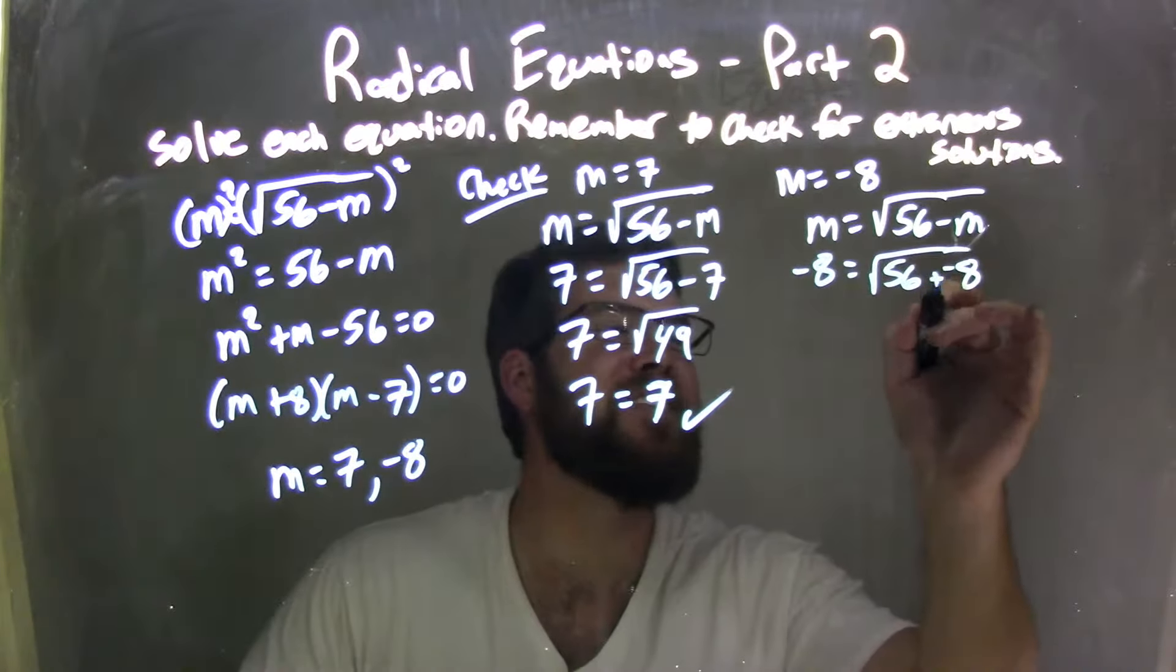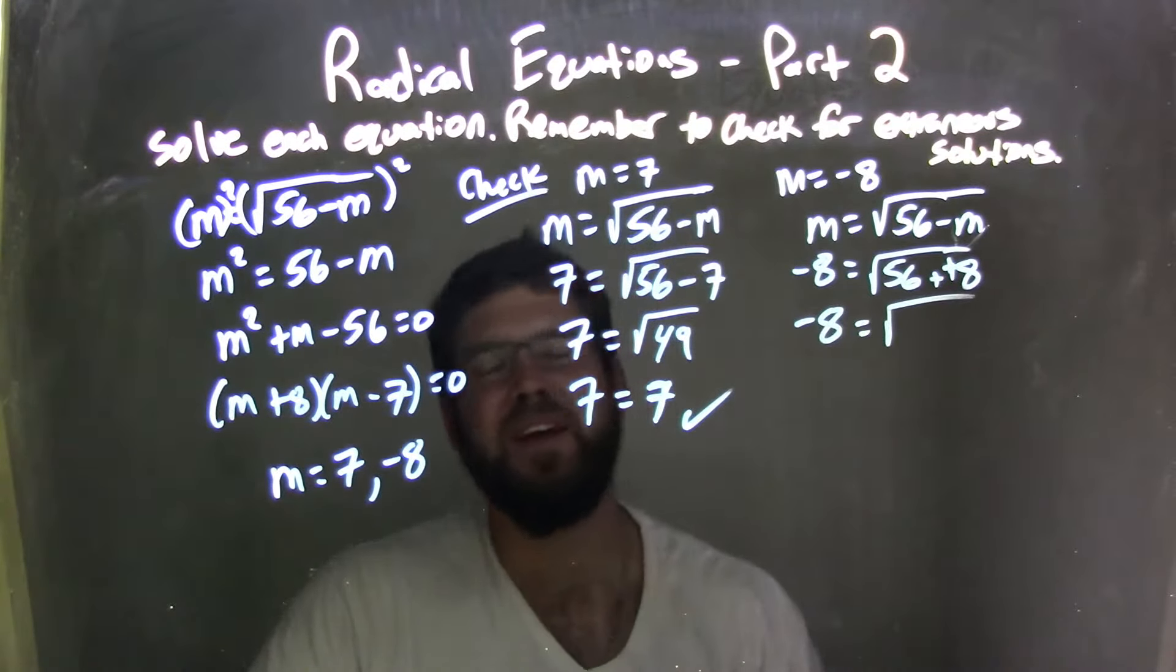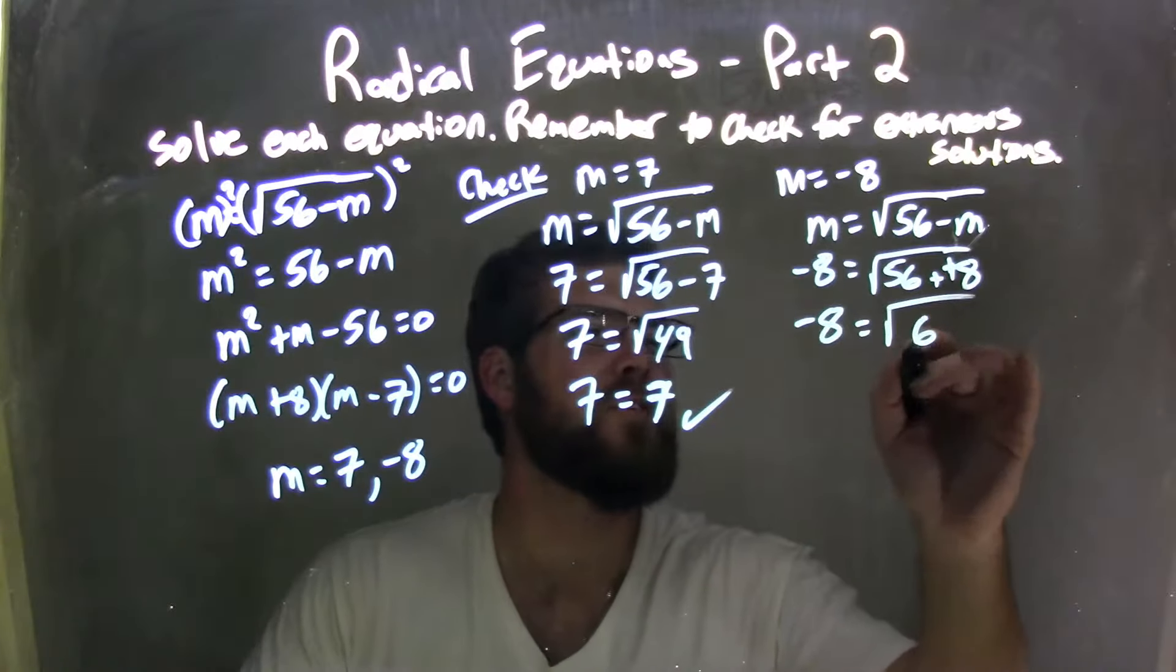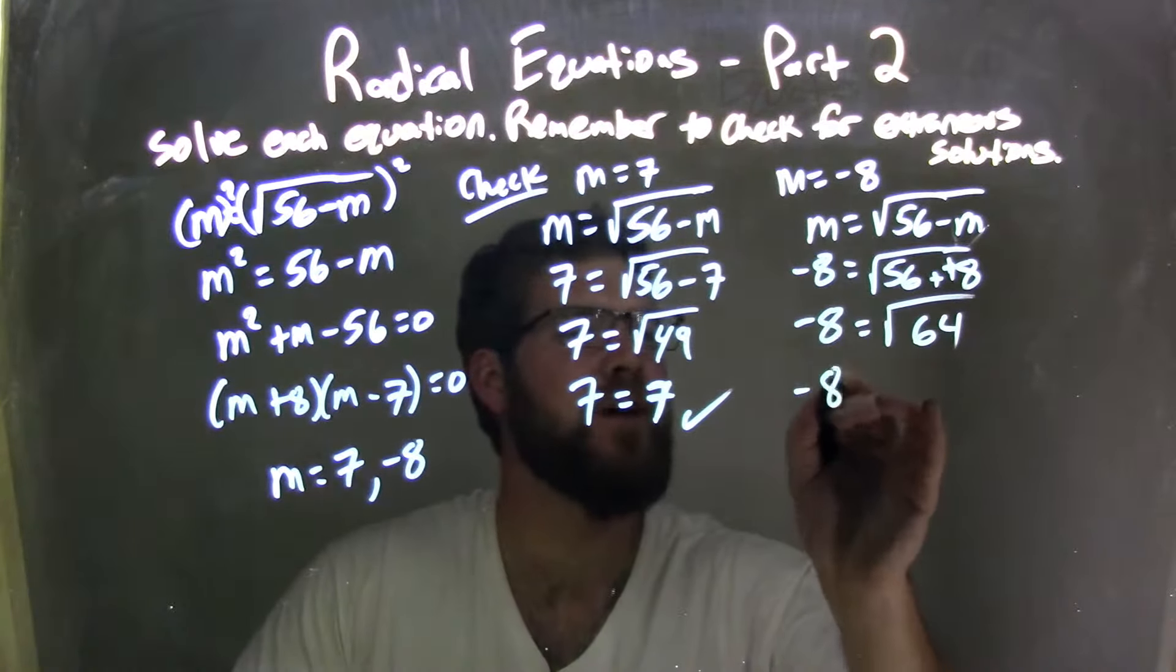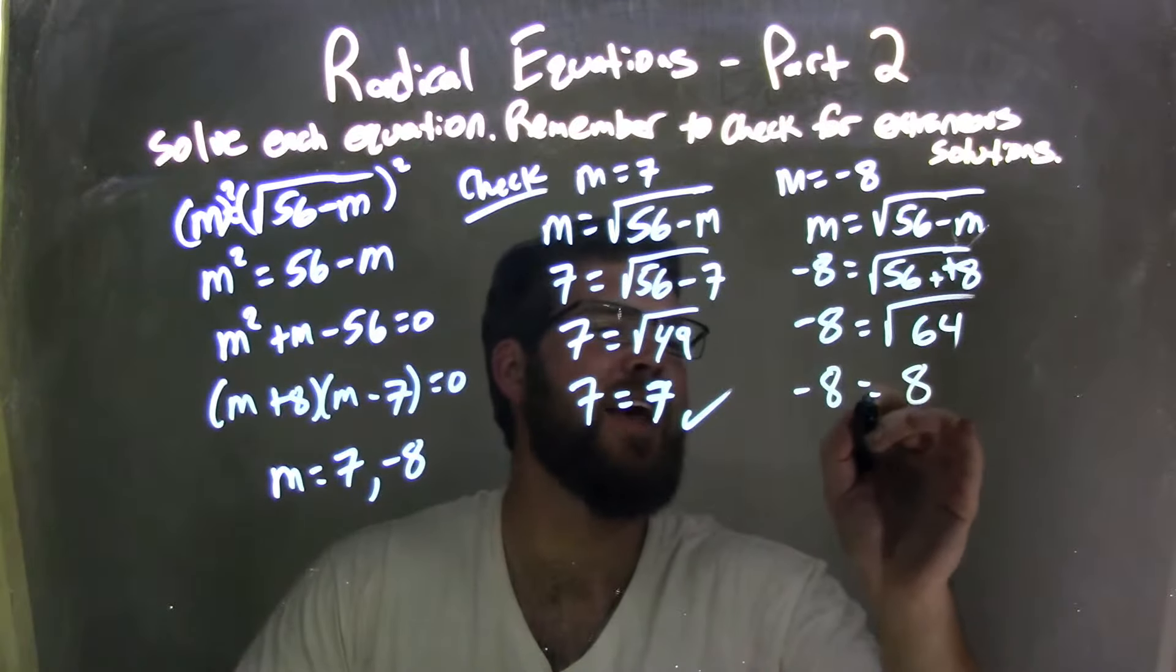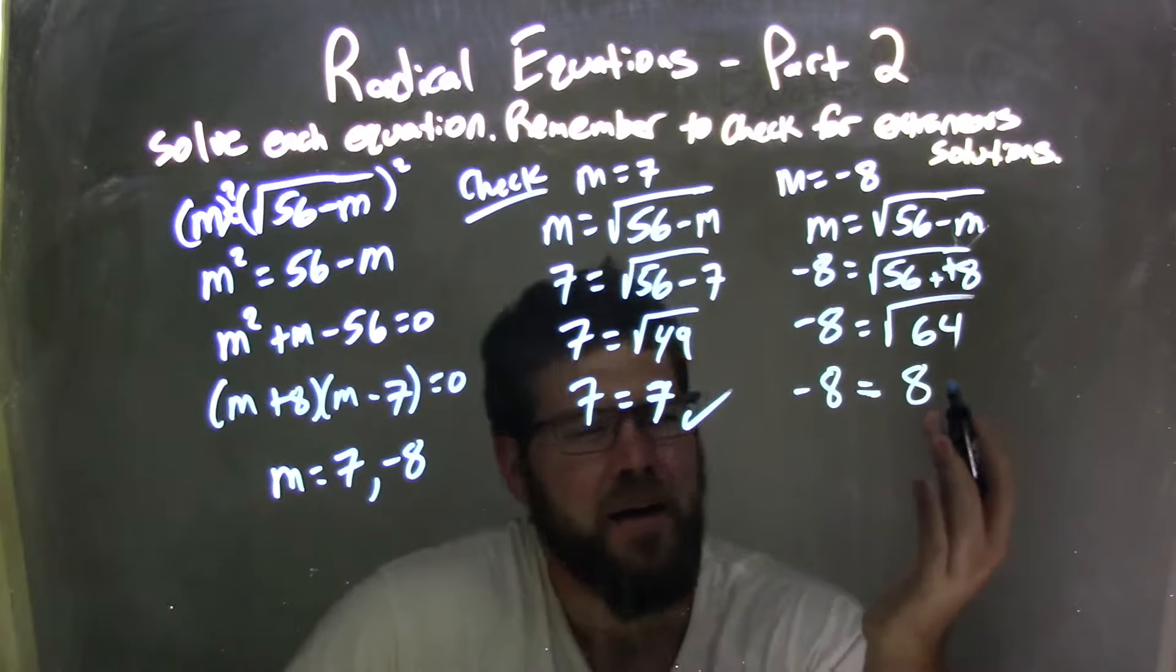What does that come out to be? Well, minus a negative is like plus a positive, right? So negative 8 equals square root of 56 plus 8 is 64. Square root of 64, oh fantastic, my hopes are high here. Square root of 64 is 8. Oh wait, no. Negative 8 and positive 8, not equal.